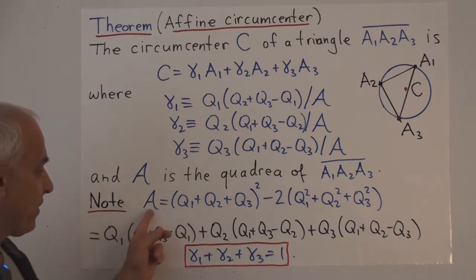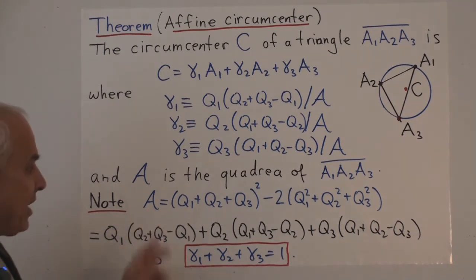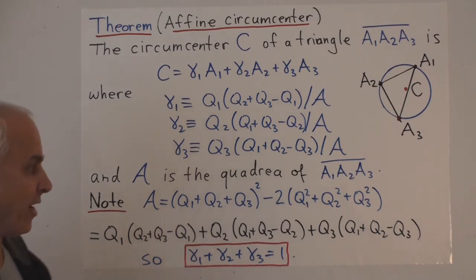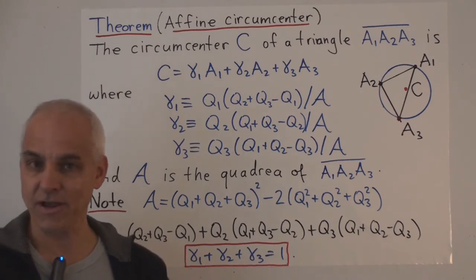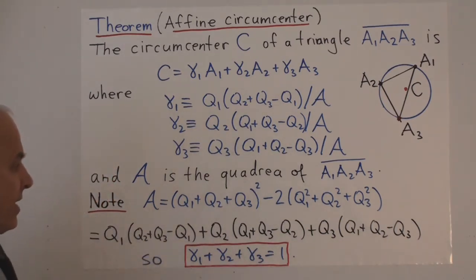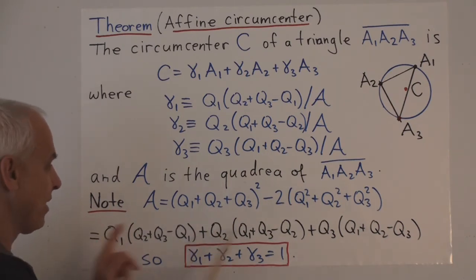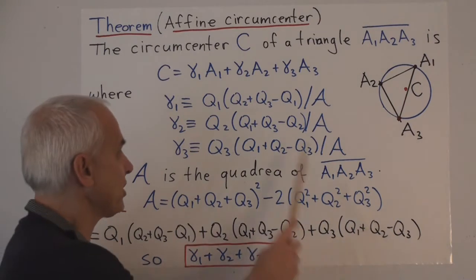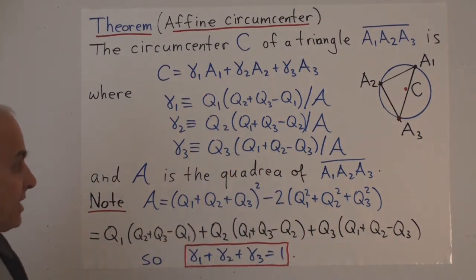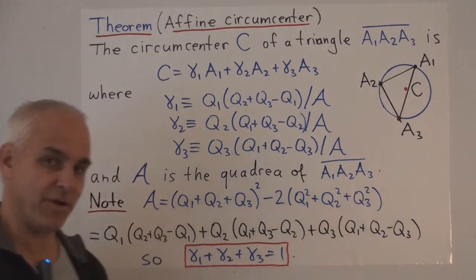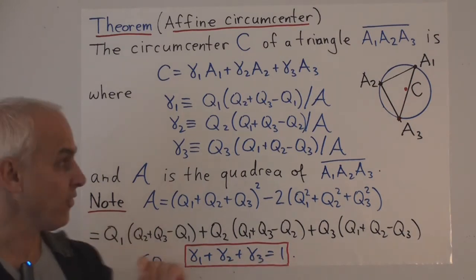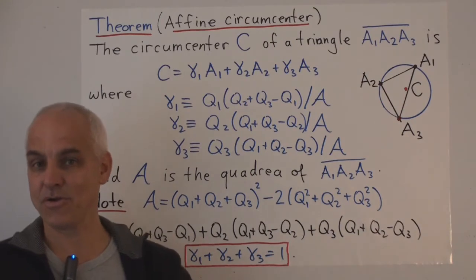The quadria of the triangle is the triple quad formula rewritten with everything brought to one side — this quantity equals 16 times the square of the area. Interestingly, this expression can be rewritten as the sum of those three numerator quantities appearing in gamma1, gamma2, and gamma3. This tells us that when we divide each of those three by the quadria, their sum is necessarily 1 — so gamma1, gamma2, and gamma3 sum to 1, making this a genuine affine or barycentric combination of the three points.